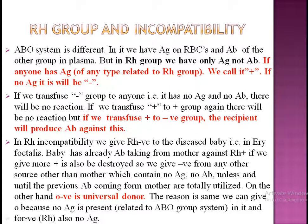Regarding the RH group, this is a very specific group in which we have the antigen and no antibody. On this basis, if anyone has an antigen, it will be called RH positive. If there is no antigen, it will be called RH negative. So, either the antigen is present or it is not present — on that basis we have only two types of RH groups: RH positive and RH negative.